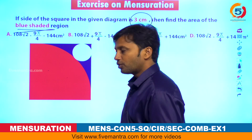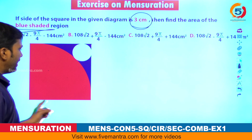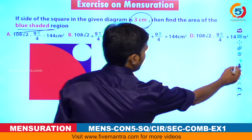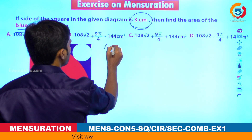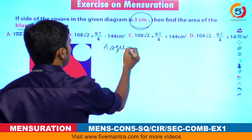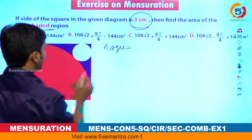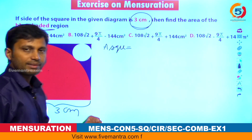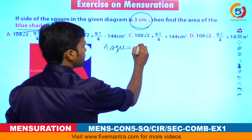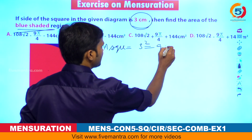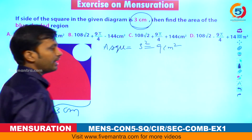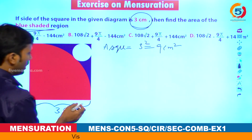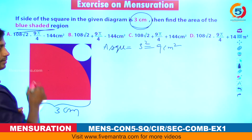Let us find each one. Area of the square: the side is given as 3 centimeters, so the area = 3² = 9 cm².